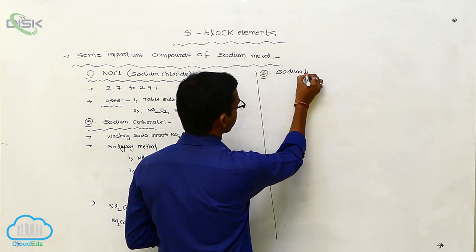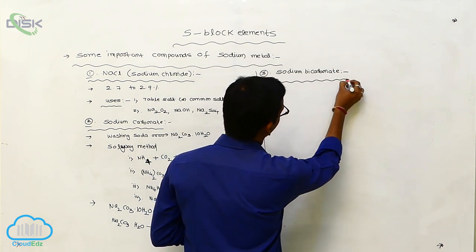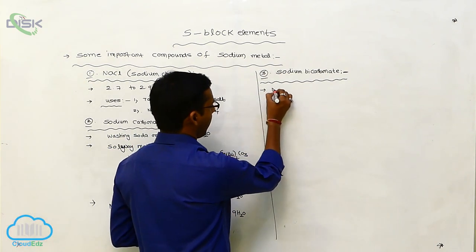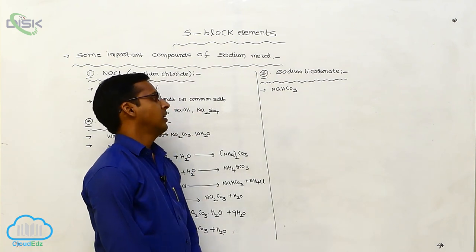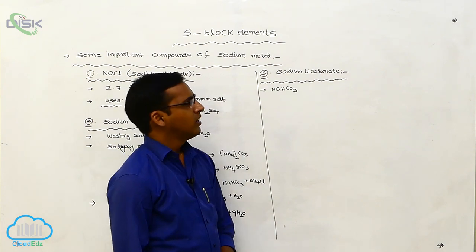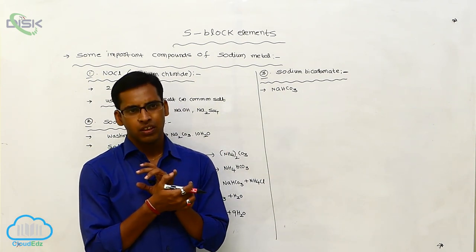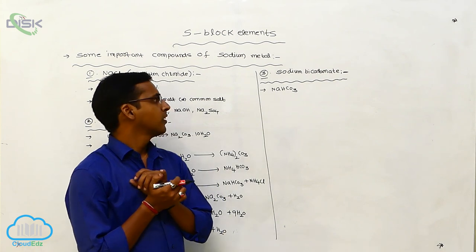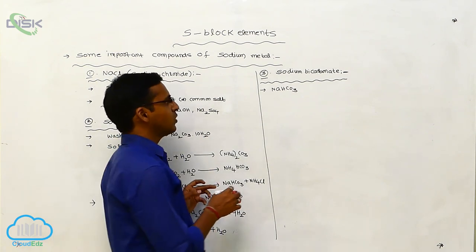Next is sodium bicarbonate, called baking soda. Its formula is NaHCO₃. It is prepared by general methods and is used similarly in glass materials, paper industry, and textile industry. It is also used as an antiseptic agent. These are the uses of sodium bicarbonate.